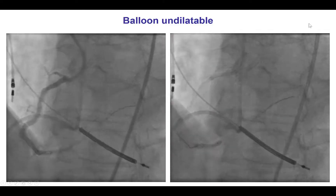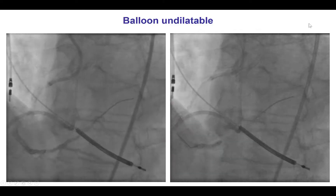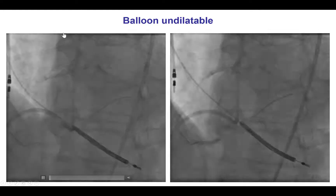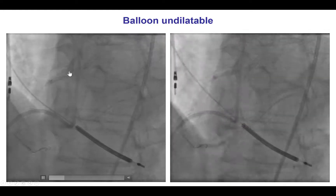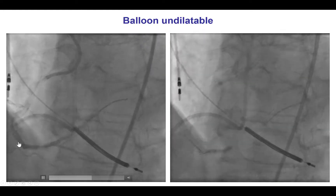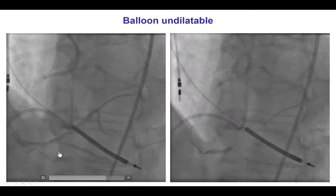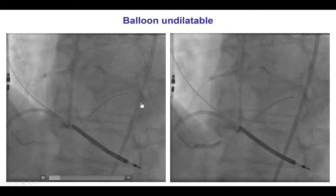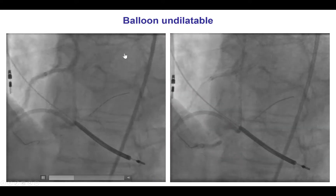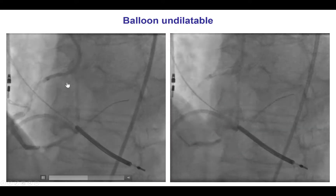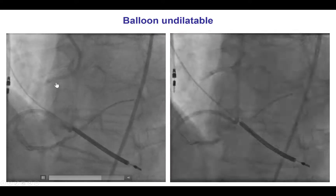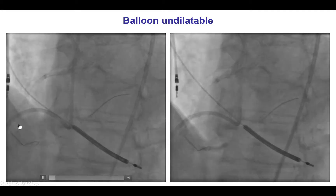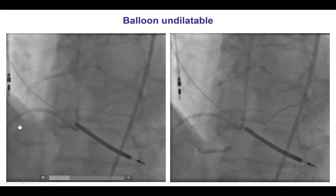We then attempted to PCI the right coronary artery. We were anticipating this to be challenging because of the tortuosity and severe calcification. That is why we used an 8-French AL-1 guide catheter that can provide very strong support for delivering equipment.